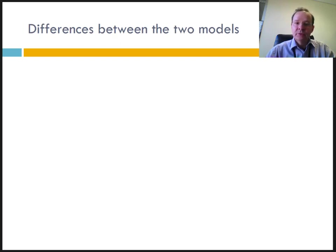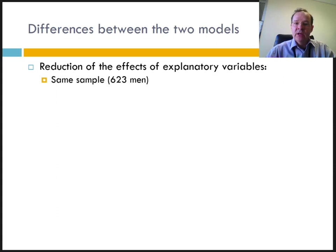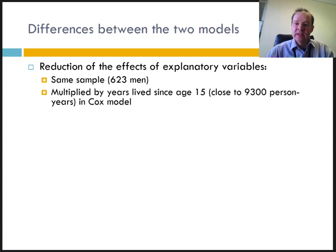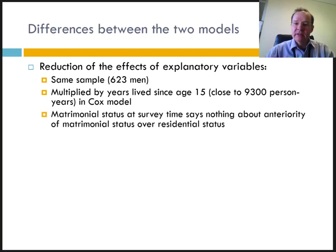So, the reduction in the effects of the explanatory variables is not related to lower numbers. On the contrary, it is the same sample of 623 men who experienced 415 exits from housed status. In addition, this sample is multiplied by the number of years lived, a total of 9300 person-years. The difference in outcome for marital status in both models is due to the fact that the current marital status does not say anything about the anteriority of marital status in relation to residency status.